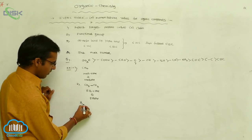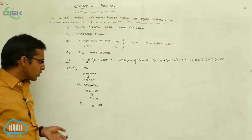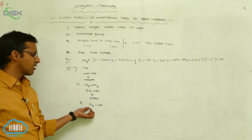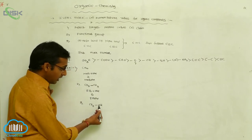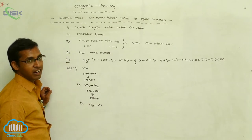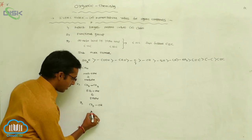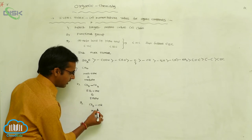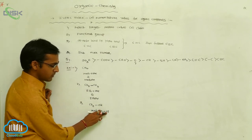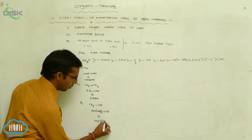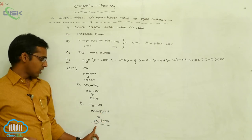Now consider a compound with a functional group: CH₃OH. The functional group is present, so give it the lower number and first preference. How many carbons? One carbon, so the root word is 'meth'. The functional group is –OH, which is alcohol. For alcohol, the secondary suffix is '-ol'. The 'e' in methane is replaced with '-ol', giving the name methanol — this is your alcohol.